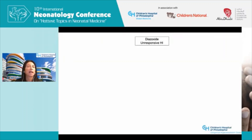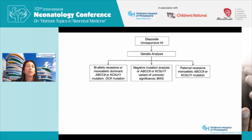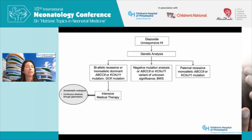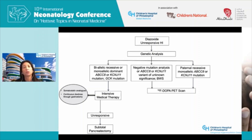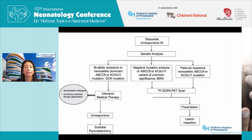In diazoxide-unresponsive hyperinsulinism, genetic analysis determines likelihood of focal disease and guides who needs a PET scan. If genetic testing suggests diffuse disease, we proceed directly to intensive medical therapy including somatostatin analogues or continuous dextrose via gastrostomy; if that fails, subtotal pancreatectomy is required. If genetic testing suggests Beckwith-Wiedemann syndrome, focal disease, or is inconclusive, we perform imaging; if a focal lesion is identified it is resected surgically, and if not, intensive medical therapy followed by subtotal pancreatectomy if needed.